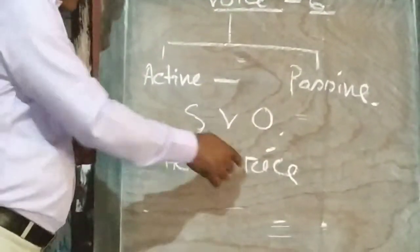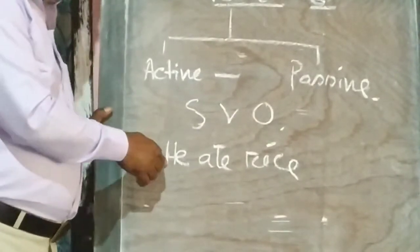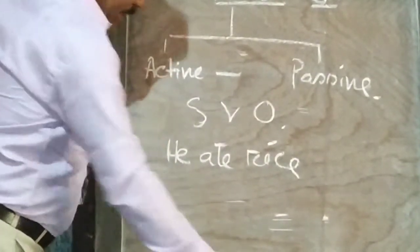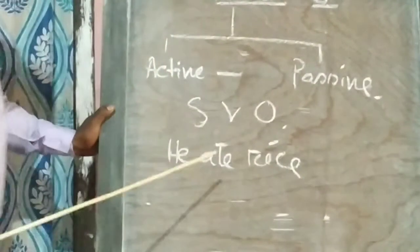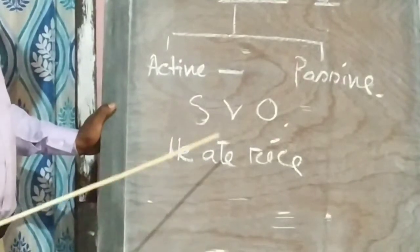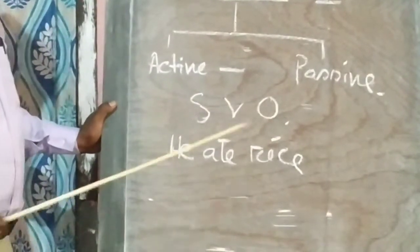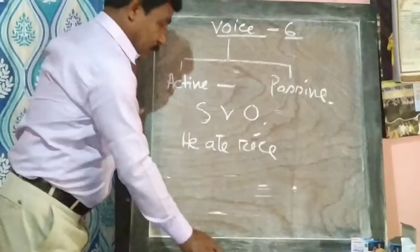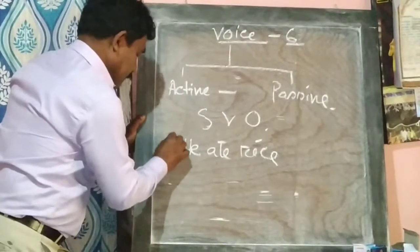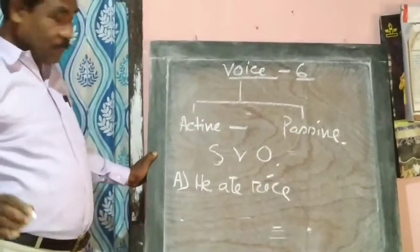He eats rice. Here, 'he' is the subject, 'rice' is the object. This sentence is in active voice.